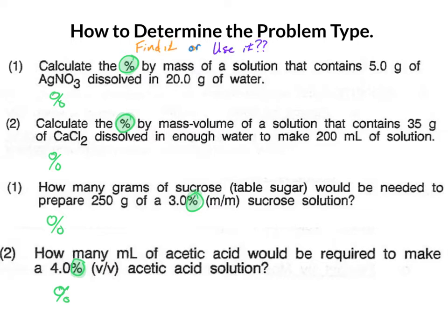Next, we need to decide if this is a find it or a use it type of problem. We look at the question — it should tell us what we need to know. If it says calculate the percent, that would be a find it. If we are given a percentage, then we're going to use it, because we already have that percentage.